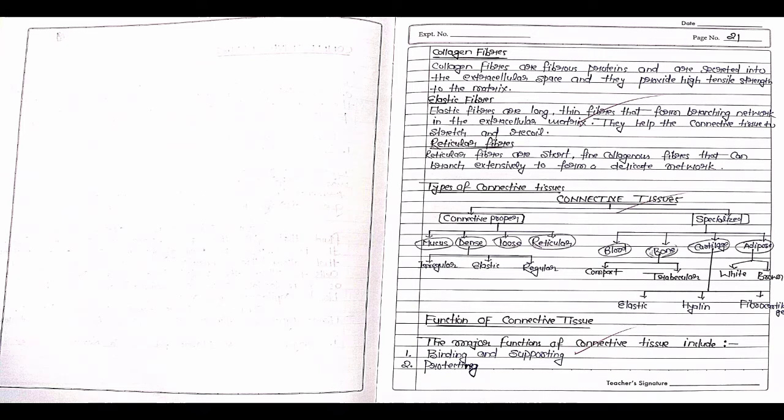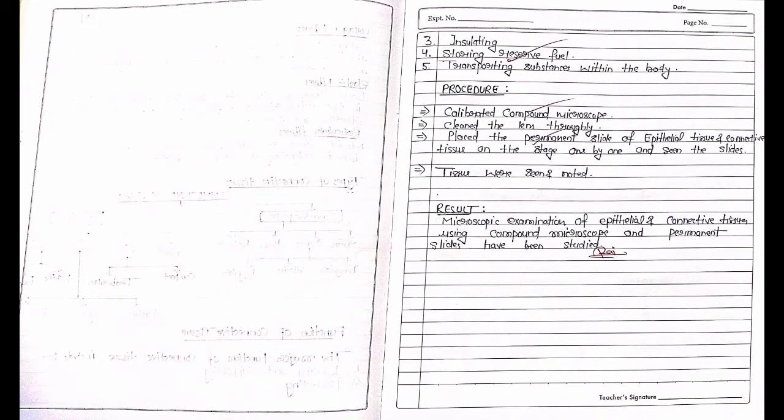Three types of fibers are found in connective tissue: collagen fiber, elastic fiber, and reticular fibers. Then we see the types of connective tissue and their functions. After that we see the procedure. The procedures are: first, calibrate the compound microscope.